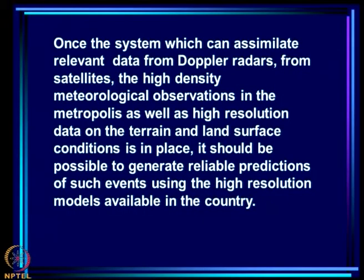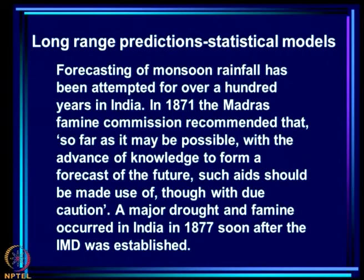Once a system that can assimilate data from Doppler radars, satellites, high-density meteorological observations, and high-resolution terrain and land surface conditions is in place, it should be possible to generate reliable predictions of such intense rainfall events using high-resolution models. This post-factor analysis leads to optimism that we can harness resources to generate reasonable predictions. Now let us consider long-range predictions; in this lecture I will consider only statistical models, and in the next lecture I will discuss how state-of-the-art coupled atmosphere-ocean models perform in monsoon prediction.